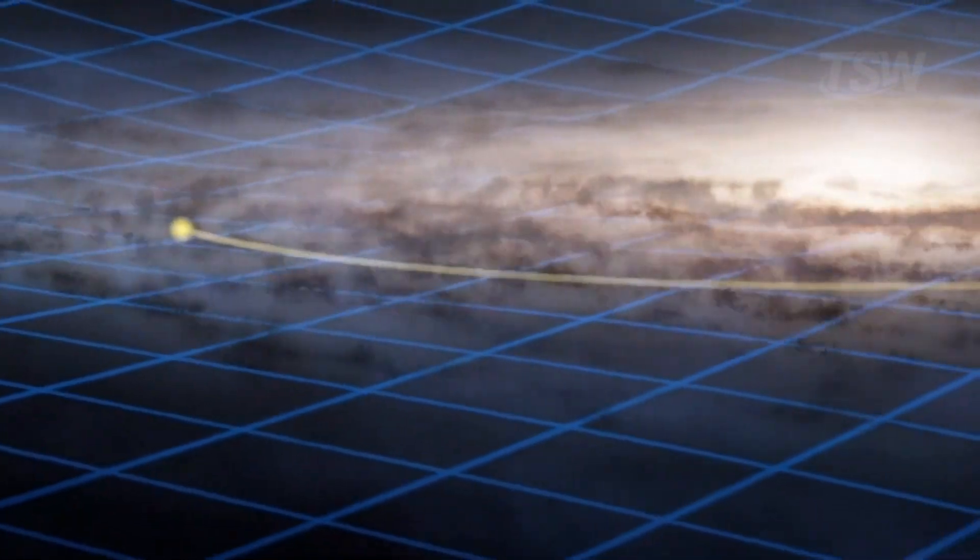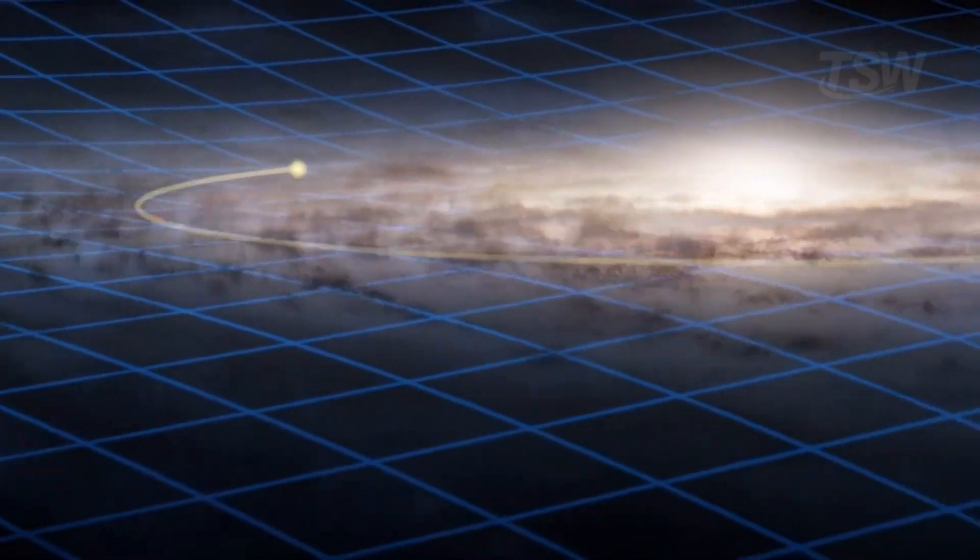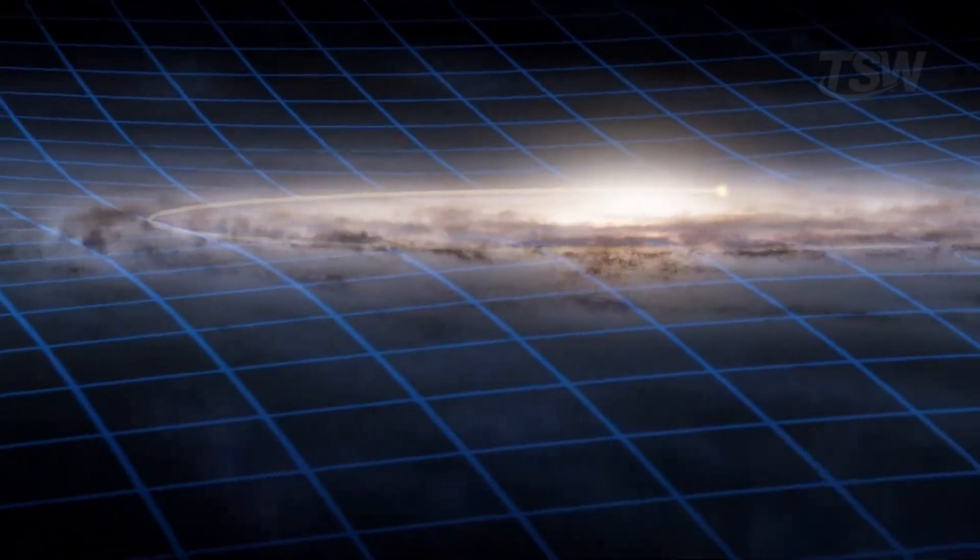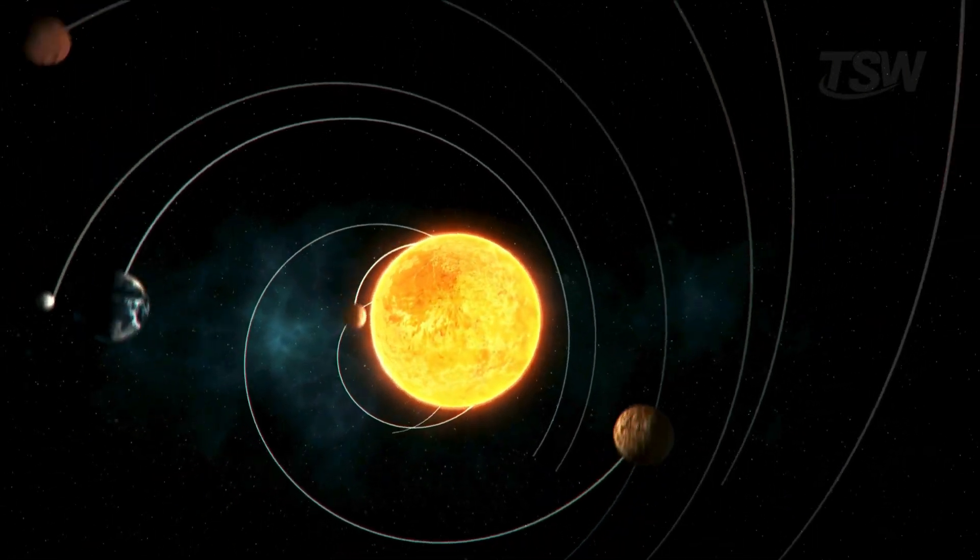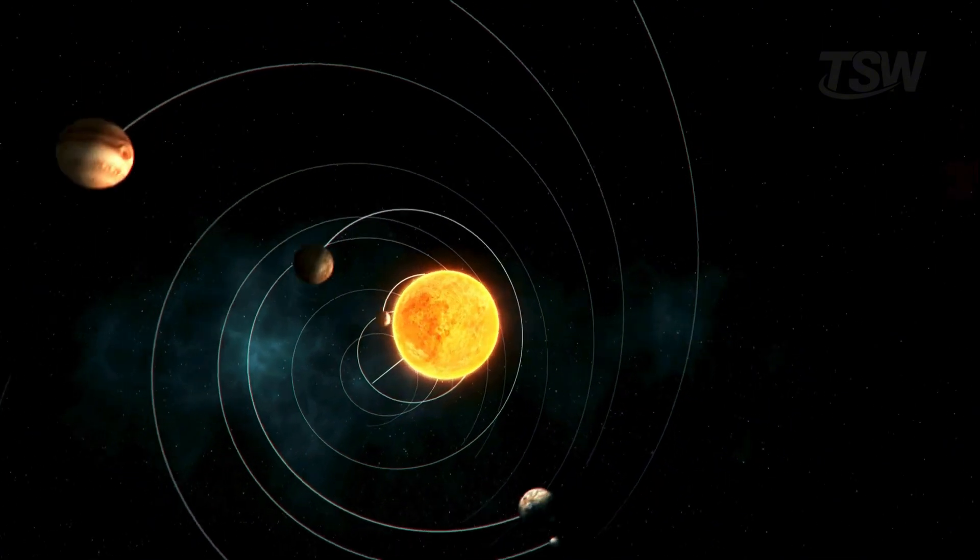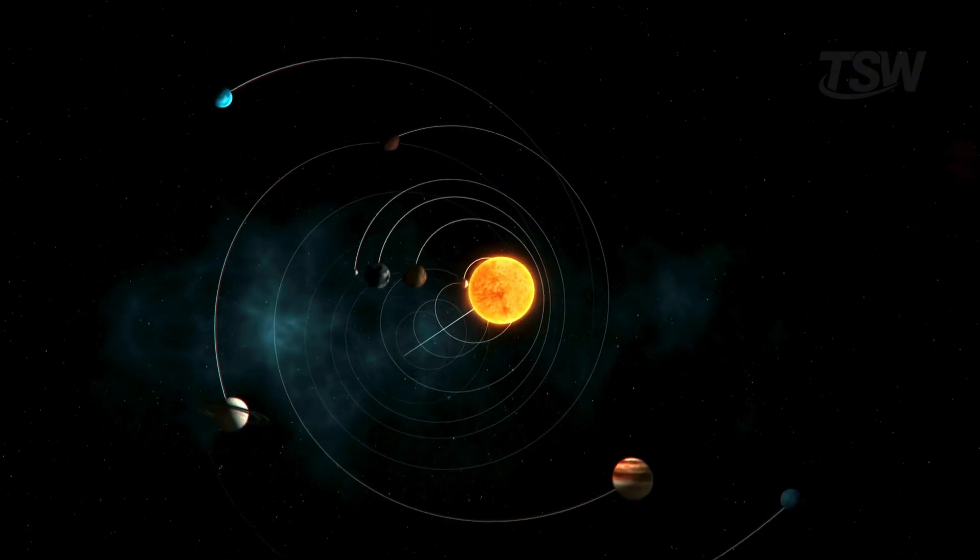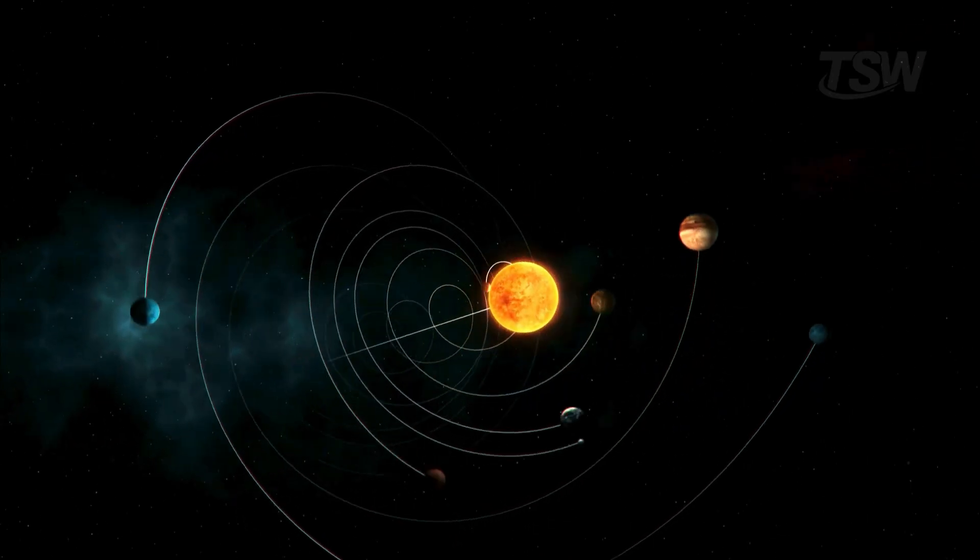In other words, the solar system never returns to the same place. Even when Earth completes a lap around the sun and you celebrate your birthday, the sun has already moved millions of kilometers ahead. This means that every second the entire solar system is advancing, and we are literally traveling with it through space, never passing through the same point in the universe twice.